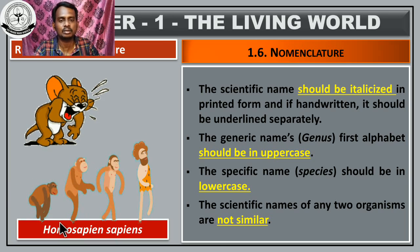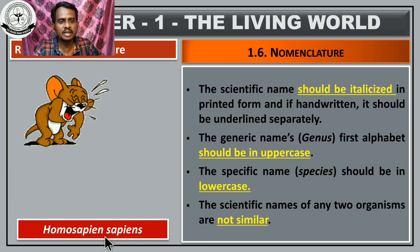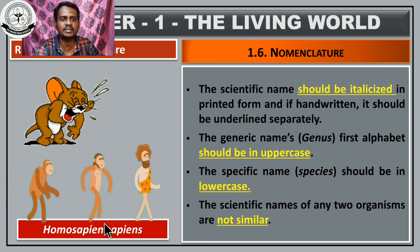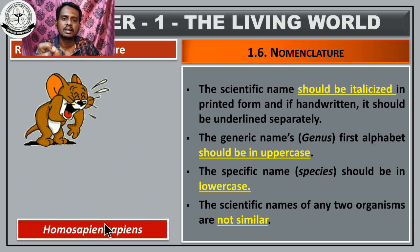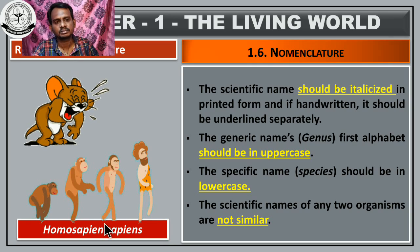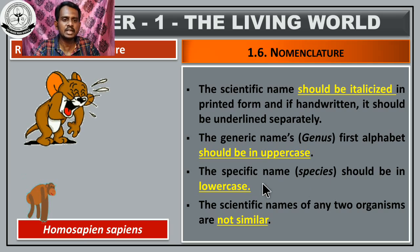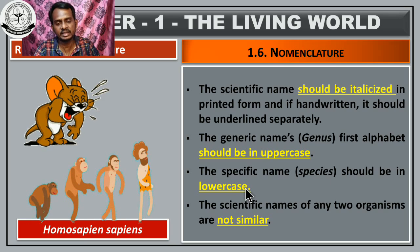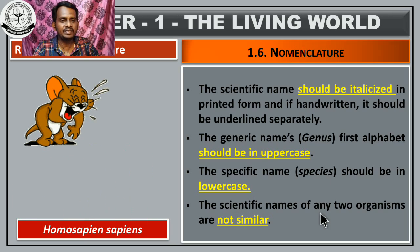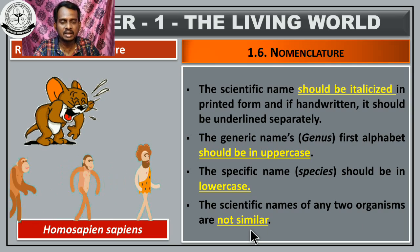The genus name first letter should be capital, and the species name should be in lowercase — that means it should start with a small letter. The specific name or species name should be in lowercase. Additionally, the scientific name of any two organisms are not similar — each organism must have a unique scientific name.